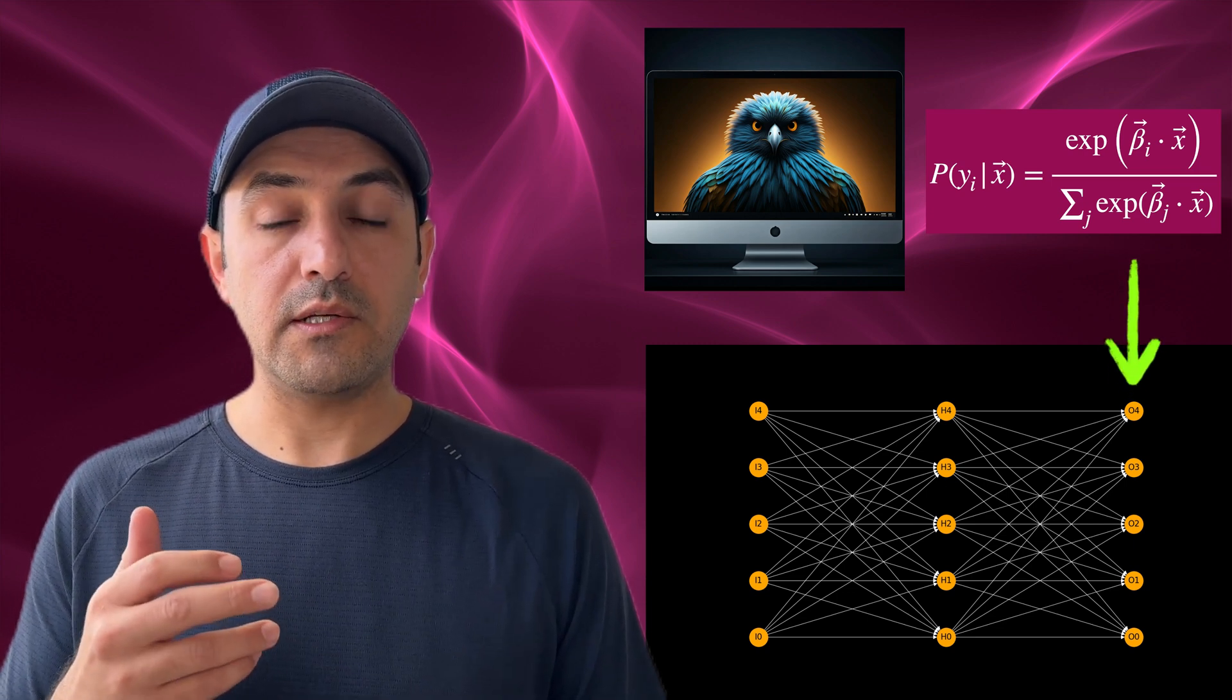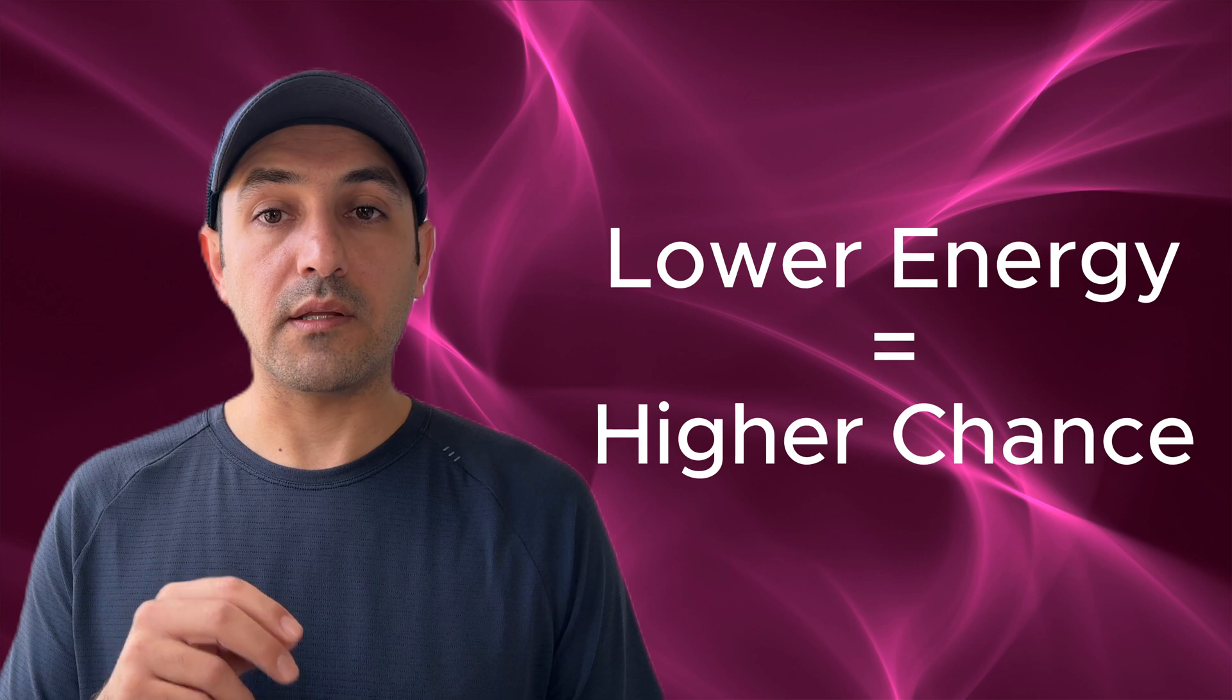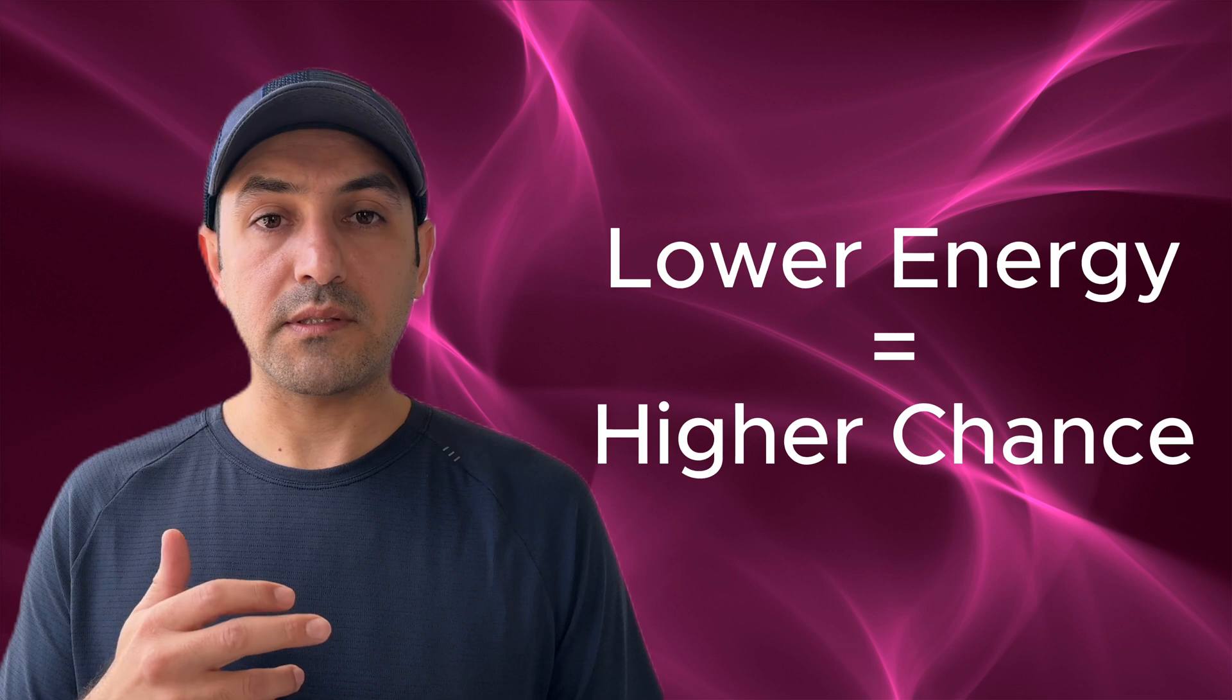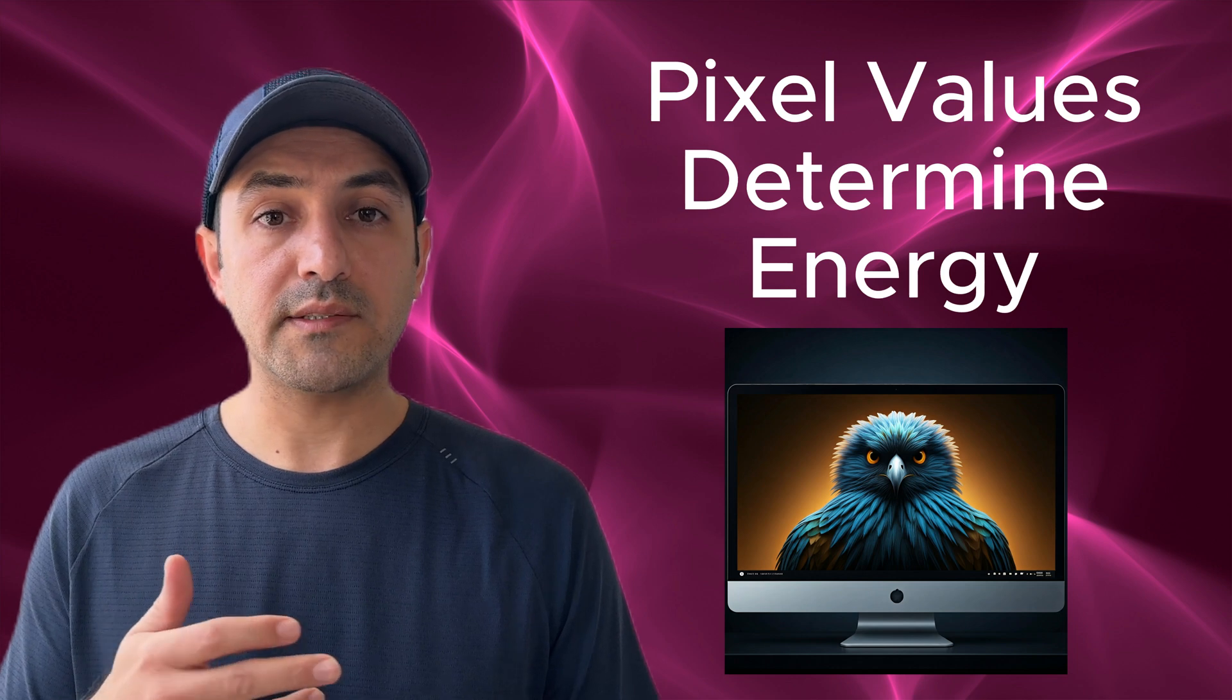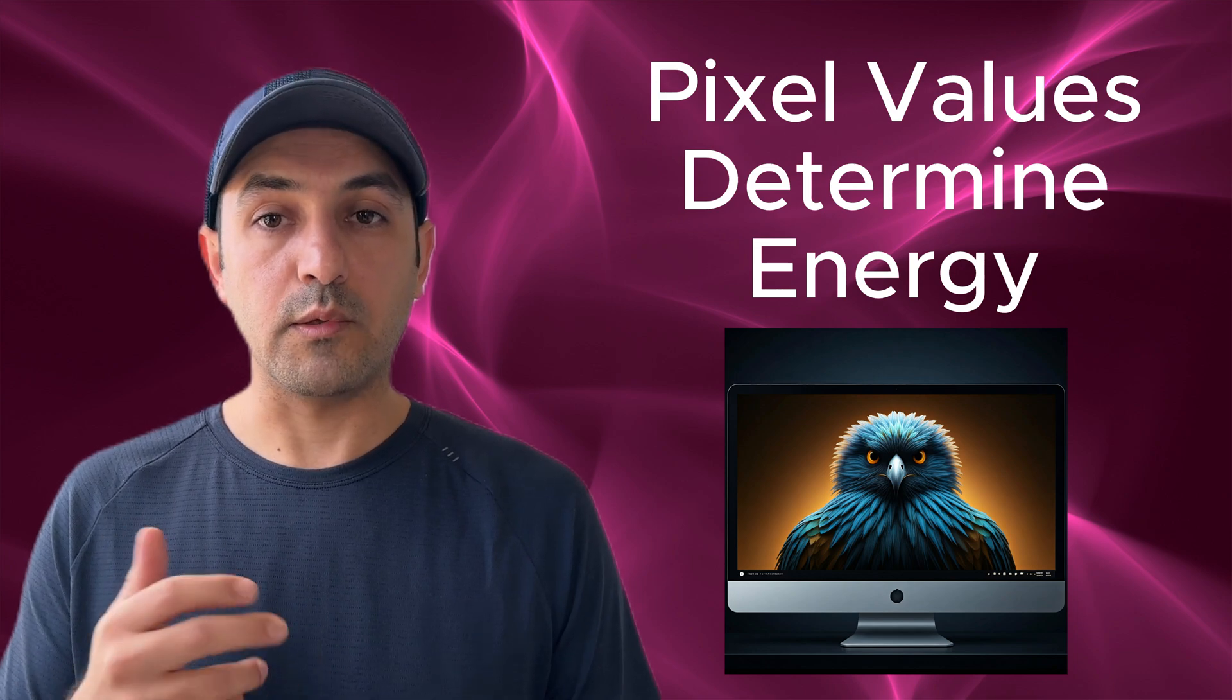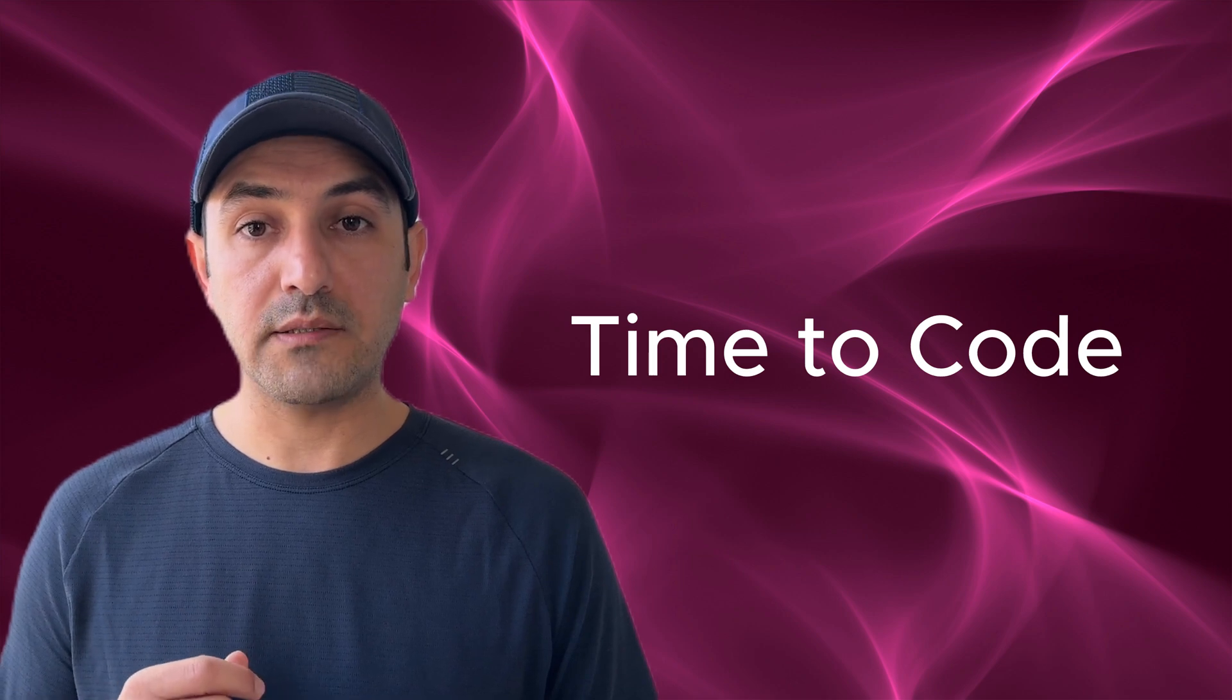The softmax function then comes into play. It uses these energy values to calculate probabilities. But here is the trick: classes with lower energy get higher probabilities. This is because the Boltzmann-like formula of softmax naturally favors states or categories with the least energy, just like in physics. The class with the highest probability, or equivalently the lowest energy, becomes the computer's prediction. Depending on their pixel values, sometimes the dog has the lowest energy, sometimes the cat has the lowest energy, and sometimes the bird gets the lowest energy.